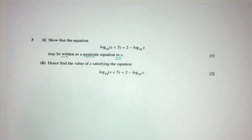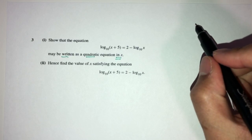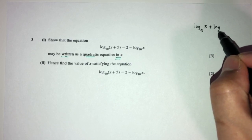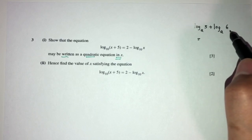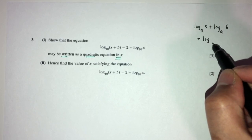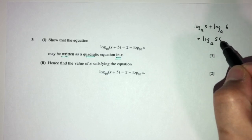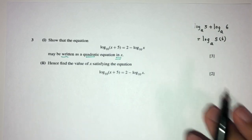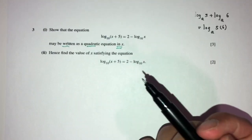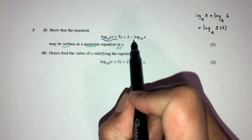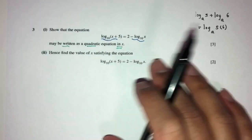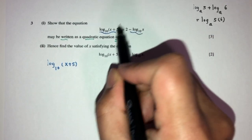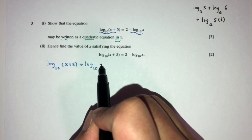Since we have logs, we have to use the laws of logarithms. For example, if you have log base a of 5 plus log base a of 6, since they share the same base, you can combine them: log base a of 5 times 6, which equals log base a of 30. We use these laws to simplify. First, regroup both log base 10 terms on one side: log base 10 of (x plus 5) plus log base 10 of x equals 2.